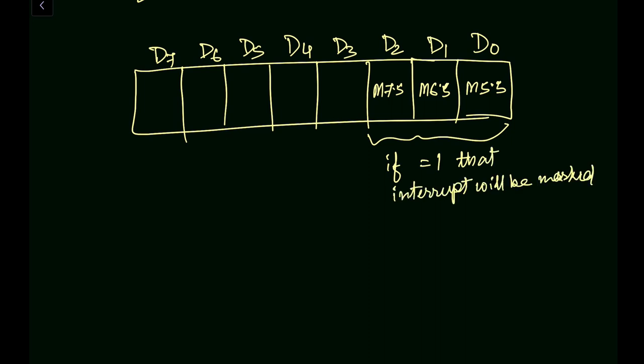So when suppose we have 1, 0, 0, what will be the meaning? That means this value is equal to 1, that means RST 7.5 will be masked. This will be masked or disabled or covered. So these are the least three bits of this mask status.